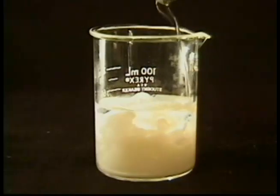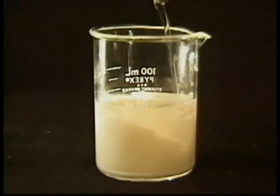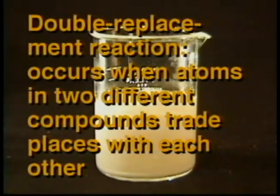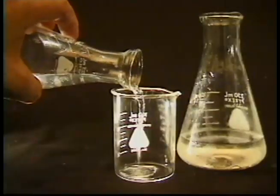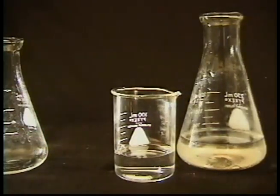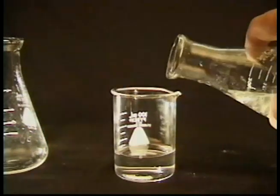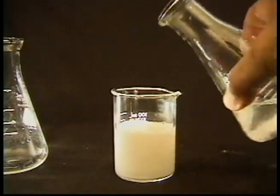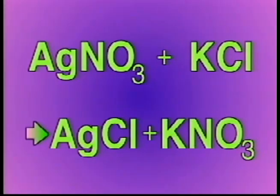In other reactions, it is possible for atoms in two compounds to replace each other. A double replacement reaction involves atoms in two different compounds trading places with each other. Here, silver nitrate is mixed with potassium chloride, causing the potassium and silver ions to trade places with each other, resulting in a double replacement to form two new compounds. In this equation, notice how the silver Ag bonds to the Cl, and the potassium K bonds to the NO3.